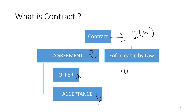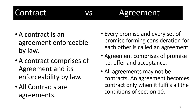Now let's get into the different categories or classifications of contracts. But first, let's understand the distinction between an agreement and a contract. A contract is an agreement enforceable by law. An agreement is every promise or every set of promises forming consideration for each other. A contract comprises two things: an agreement and its enforceability. An agreement comprises two things: offer and acceptance.